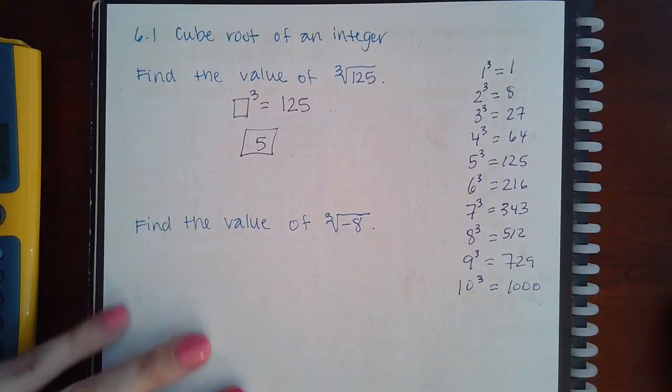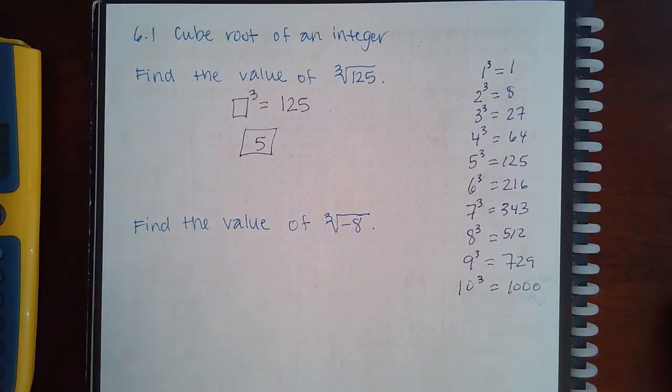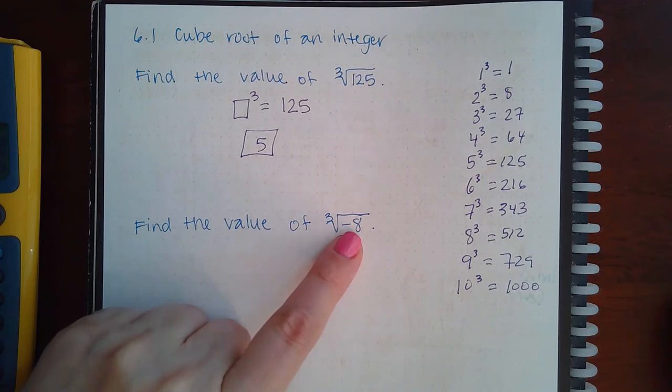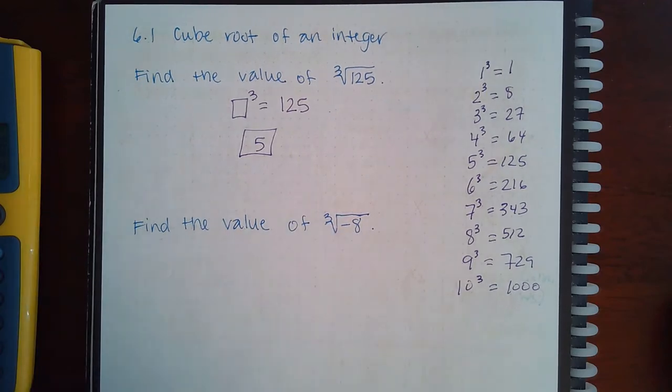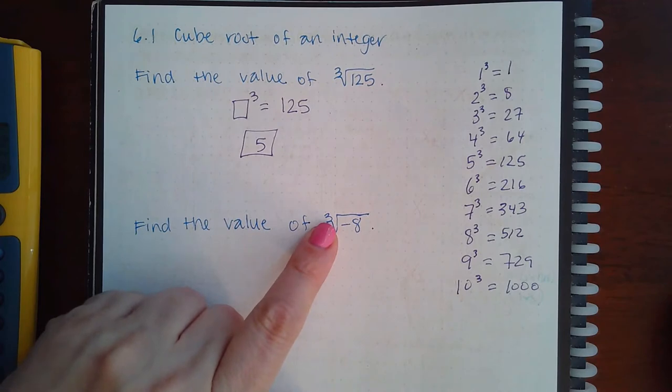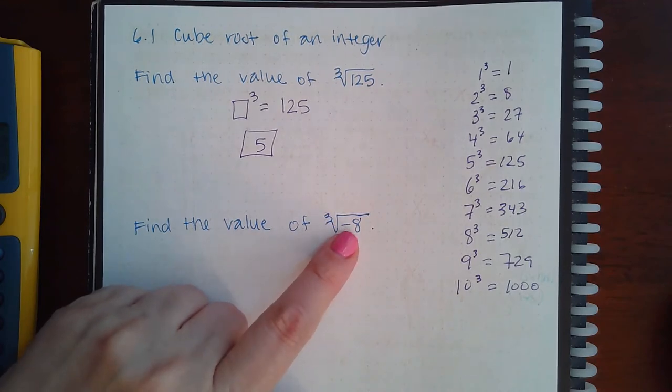Now, when there's signs involved, it's very similar. I know in previous topics we talked about when the index is even, the radicand inside cannot be negative. However, when the index is odd, it's okay to have a negative.